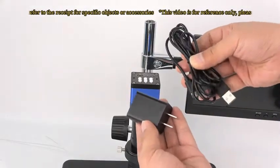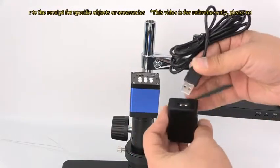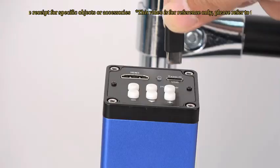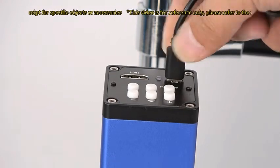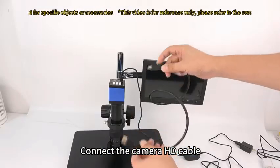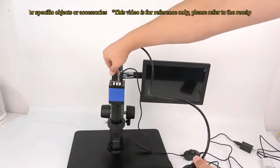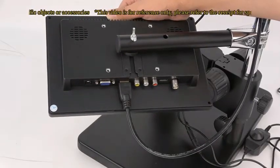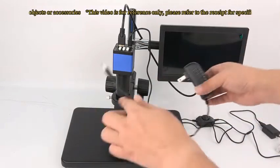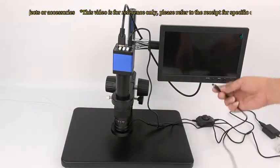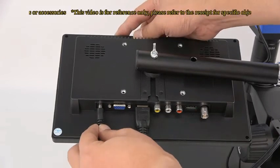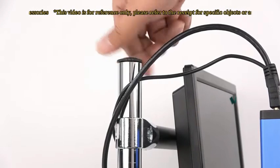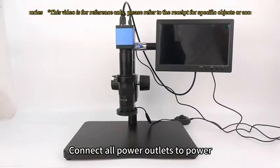Connecting the camera power cord. Connecting the display power cable. After the connection is complete, put the cover of the column back. Connect all power outlets to power.